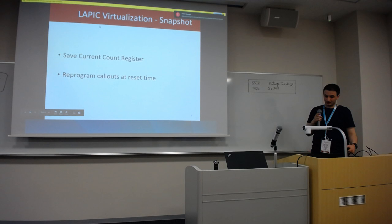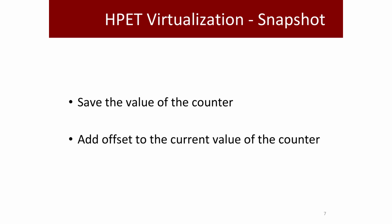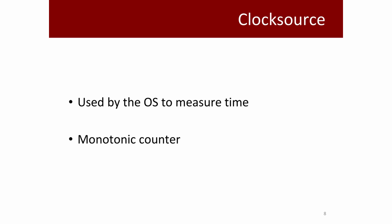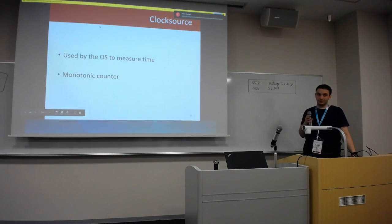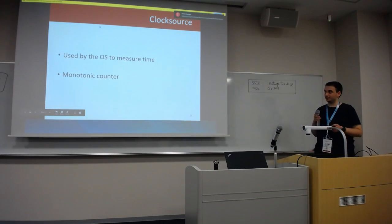The HPET uses a permanently incremented timer, and when creating the snapshot we have to save the current value of the time and use it as an offset when restoring the virtual machine. A clock source is used by the operating system to measure time — it is basically a monotonic timer that increments permanently. The OS may measure time by reading the timer at different points and subtracting the values to measure how much time has passed.